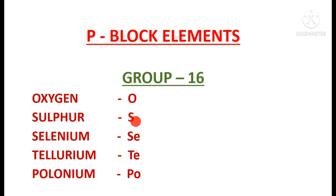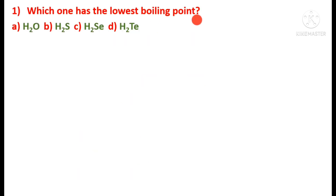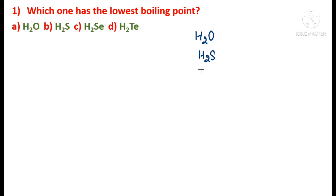We're going to see some important MCQs related to this topic one by one today. Read the question: which one has the lowest boiling point — H₂O, H₂S, H₂Se, or H₂Te? In this problem you are asked to find out the compound having the lowest boiling point among four hydrides. H₂O is the hydride of oxygen, then H₂S, H₂Se, and H₂Te.